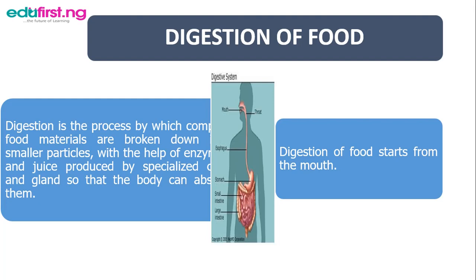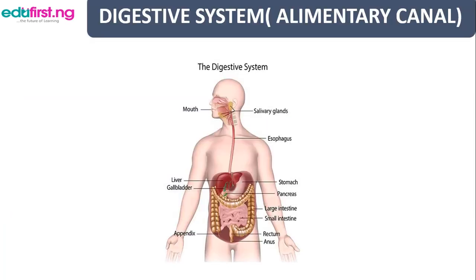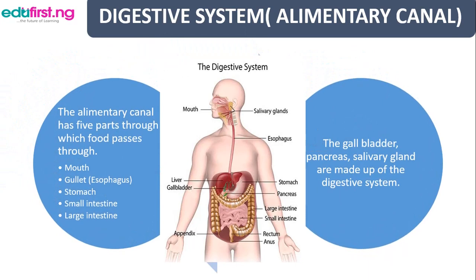Digestion starts from the mouth. We are going to look at the digestive system in brief, which is also known as the alimentary canal. This alimentary canal is divided into five parts: namely the mouth, the gullet which is also called the esophagus, the stomach, the small intestine, and the large intestine. The digestive system also consists of the gallbladder, the pancreas, and the salivary gland. All these are part of the digestive system because they aid in digestion.